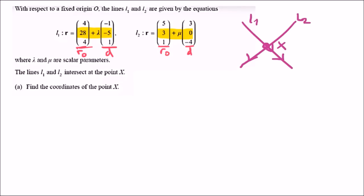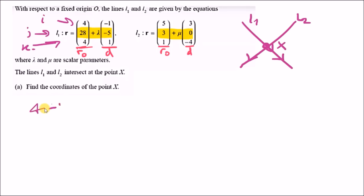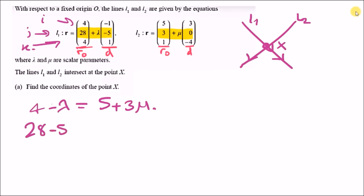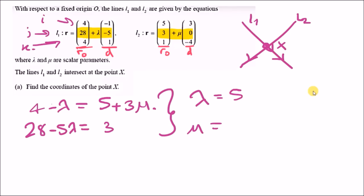At intersection, equate components. For the i-components: 4 minus λ equals 5 plus 3μ. For the j-components: 28 minus 5λ equals 3. Solving this system simultaneously gives λ equals 5 and μ equals negative 2.